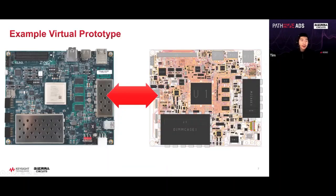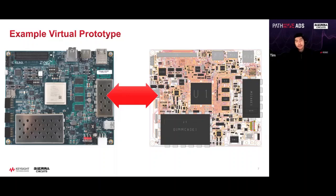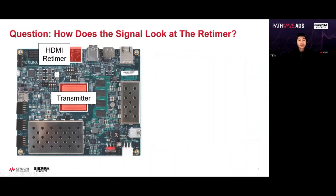Today we're going to talk about an example virtual prototype — the Xilinx FPGA ZCU104, which is all in the public domain. In the final slide I'll have resources you can use if you have ADS. The question we're going to answer today is: how does the signal look at the retimer?